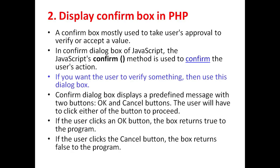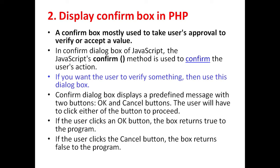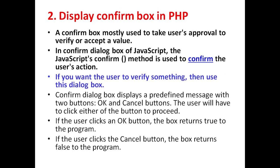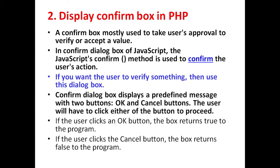Next is the confirm box. A confirm box is mostly used to take the user's approval to verify or accept a value. In the confirm dialog box of JavaScript, the confirm method is used to confirm the user's action. If you want the user to verify something, then use this dialog box. The confirm dialog box displays a predefined message with two buttons: OK and cancel.